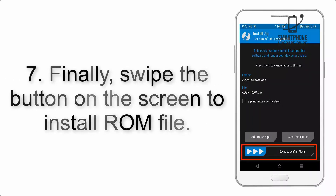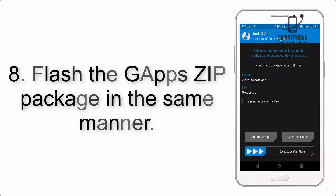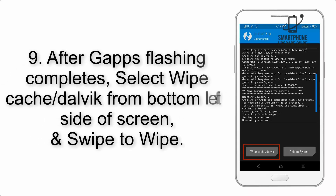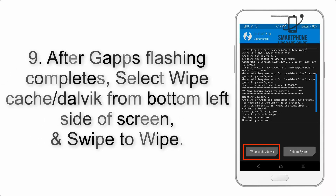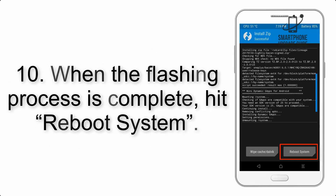Step 7: Swipe the button on the screen to install the ROM file. Step 8: Flash the GApps zip package in the same manner. Step 9: After GApps flashing completes, select Wipe Cache and Dalvik from the bottom left side of the screen and swipe to wipe.